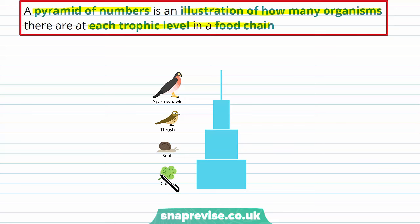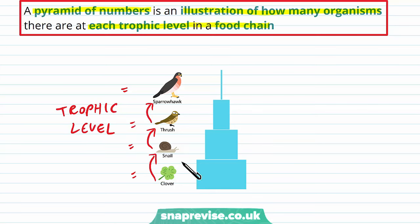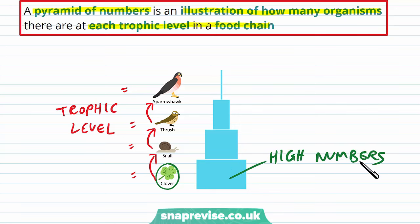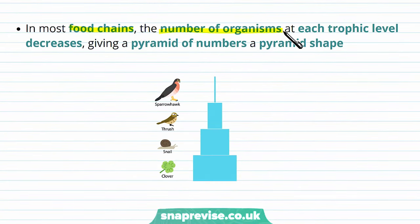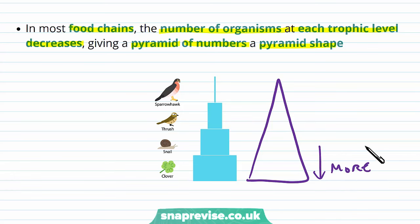Consider this diagram: clover can be eaten by the snail, which can be eaten by the thrush, which can be eaten by the sparrowhawk — each of these is a trophic level. If this is all happening in a field, the number of individual clovers is going to be quite high. There will probably be fewer snails than clovers, and at each level going up the food chain there tend to be reduced numbers. So you're unlikely to see as many sparrowhawks and thrushes as individual clovers, giving us that general pyramid shape — more at the bottom, less at the top.